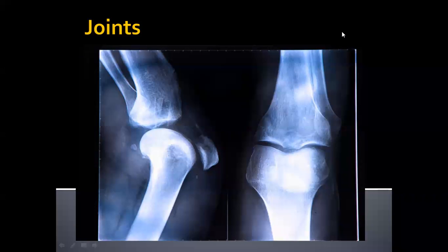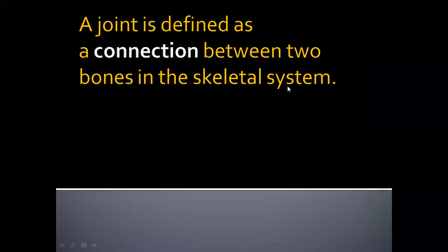Assalamu alaikum everyone, I hope you are all fit and fine. The main topic of this video is joints — we shall discuss all the types of joints and the best examples of joints. First, we'll define a joint as the connection between two bones in the skeletal system. When two or more bones join together, they form a connection point, which is called a joint.